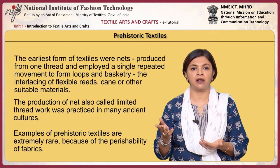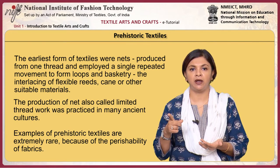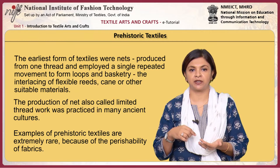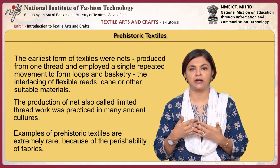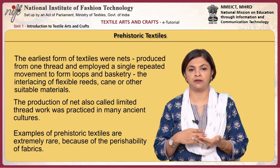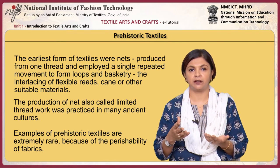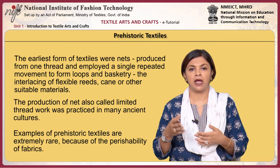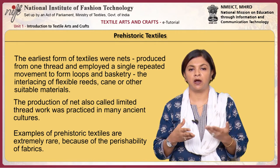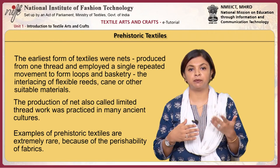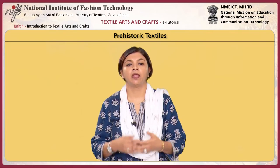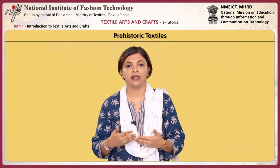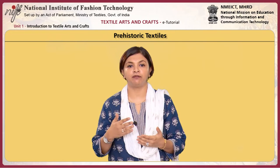The earliest form of textiles were nets produced from one thread and employed in a single repeated movement to form loops, and basketry — the interlacing of flexible reeds, cane or other suitable materials. The production of net, also called limited thread work, was practiced in many ancient cultures. Examples of prehistoric textiles are extremely rare because of the perishable nature of fabrics. The earliest evidence of weaving, closely related to basketry, dates from Neolithic cultures of about 5000 BCE.